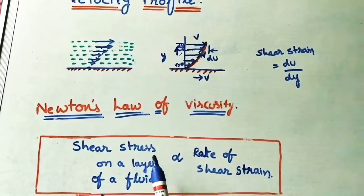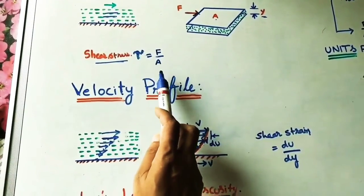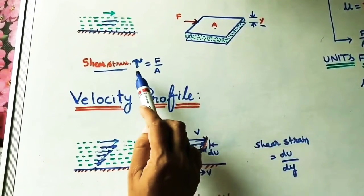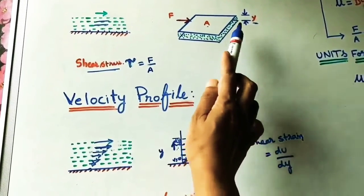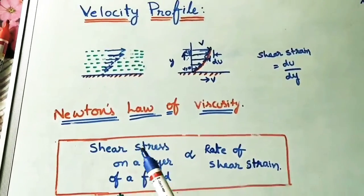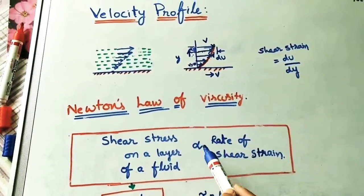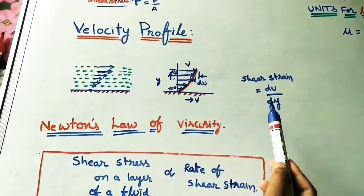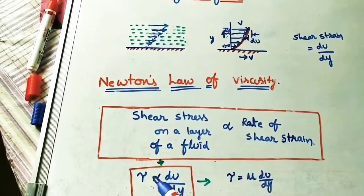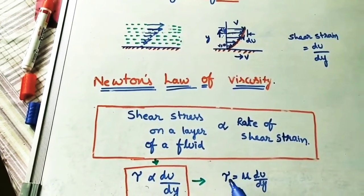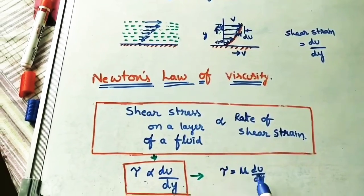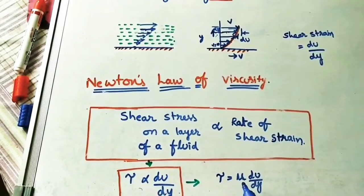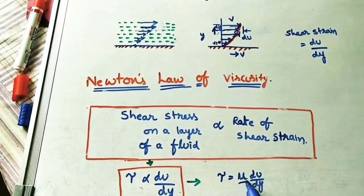Shear stress tau equals F/A (force by area). According to Newton's law: tau is proportional to du/dy. Removing the proportionality, tau = mu × (du/dy). Here mu is called dynamic viscosity, which is very important during fluid calculations. When oil or liquid is given in problems with a mu value, that indicates the dynamic viscosity of the given liquid.